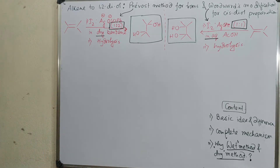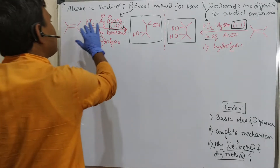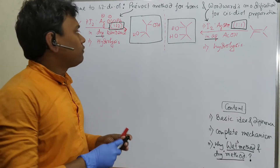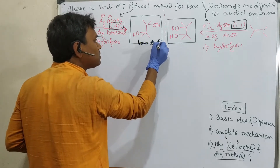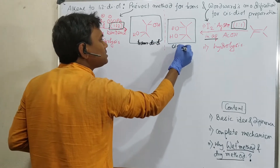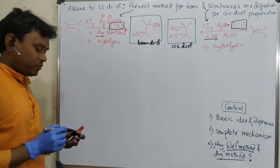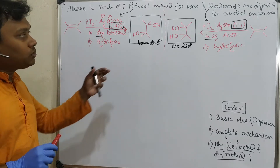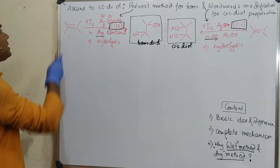The most important question is: how does changing the stoichiometry of the reagent produce an entirely different product? The Prevost method gives a trans diol, while the Woodward modification gives a cis diol. To understand why, we need to examine the mechanism in detail.